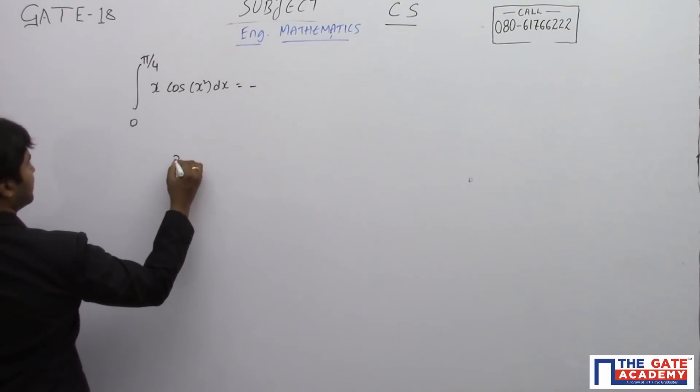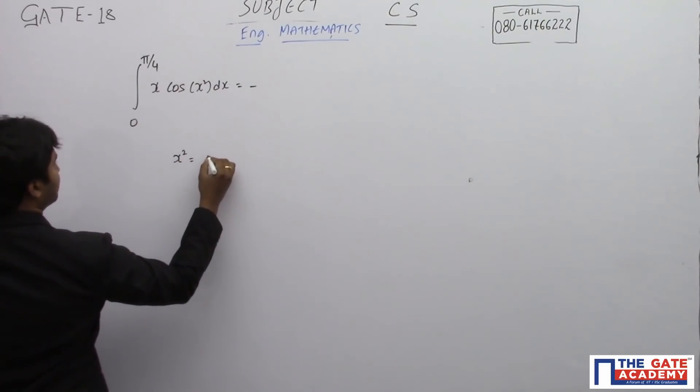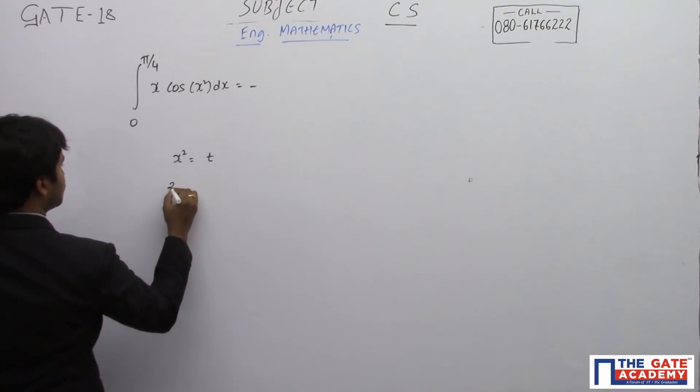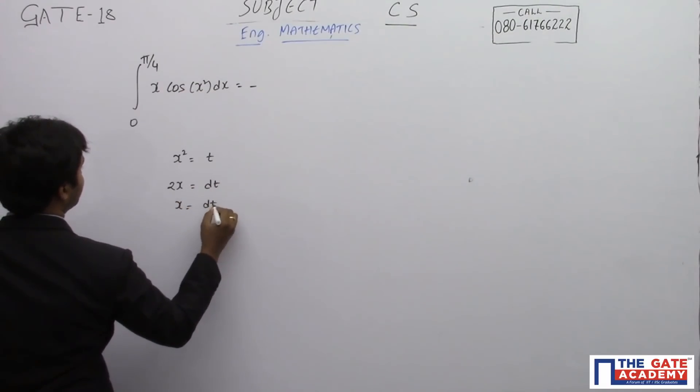If I consider x square is equal to some t, then 2x is equal to dt, so x dx is equal to dt by 2.